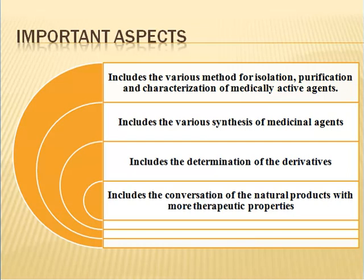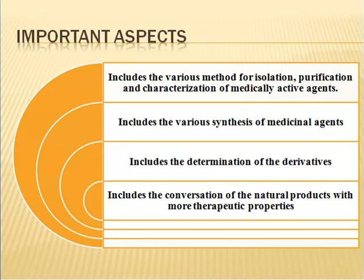Important aspects of pharmaceutical chemistry include various methods for isolation, purification, and characterization of medically active agents and materials from natural sources. It includes various synthesis of medicinal agents that could not be obtained from natural origin or synthetic duplication due to reasons of economy, purity, and adequate supply. It includes synthetic methods by which natural substances are converted into products with more favorable therapeutic or pharmaceutical properties, and determination of derivatives or forms of medicinal agents which show optimum medicinal activity.